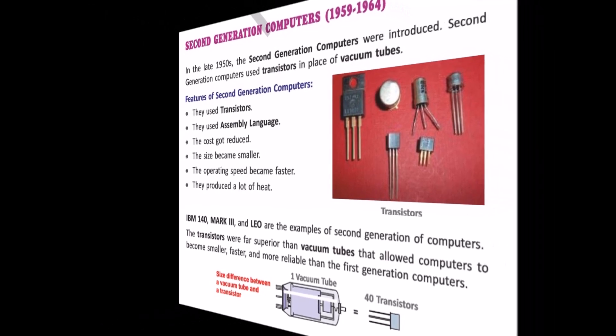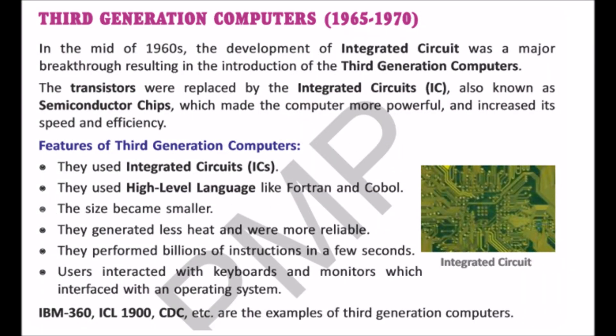Now children, come to third generation, which was around the mid-1960s. In those computers, transistors were replaced by integrated circuits, also known as semiconductor chips. Those computers started using high-level languages like FORTRAN and COBOL. Size and production of heat reduced, but reliability improved. They were able to perform billions of instructions in a few seconds. Monitors and keyboards were also introduced in that generation. IBM 360 and ICL 900 are examples of third generation computers.